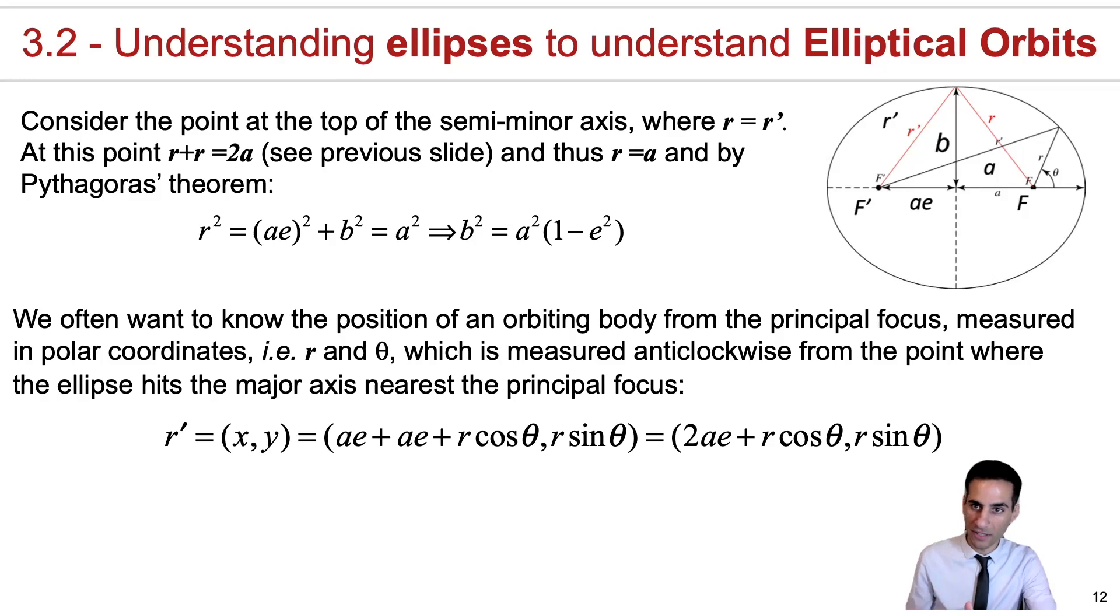We've already seen the definition, but what we're going to be using is this theta over here, with r being the distance from the prime focus, which is where typically the objects with mass will be.